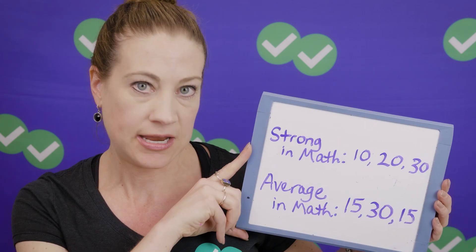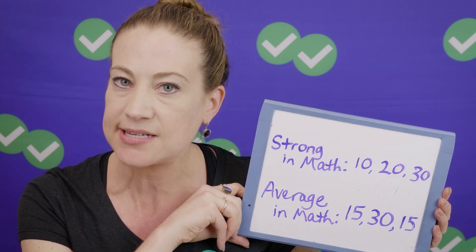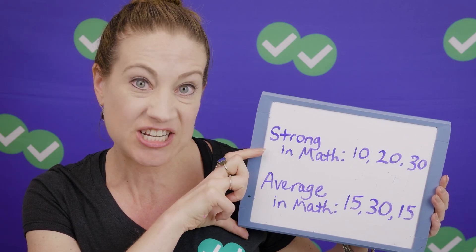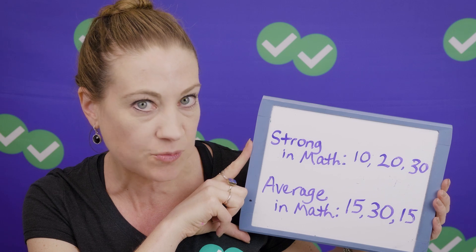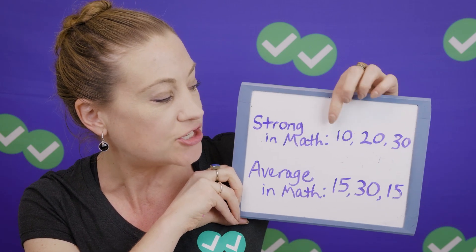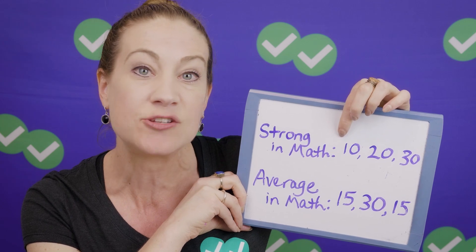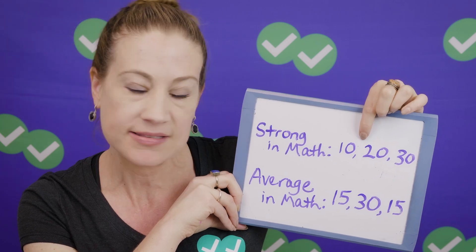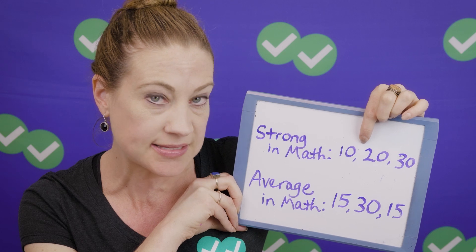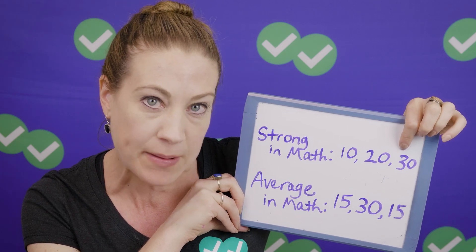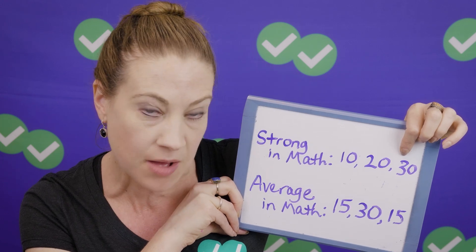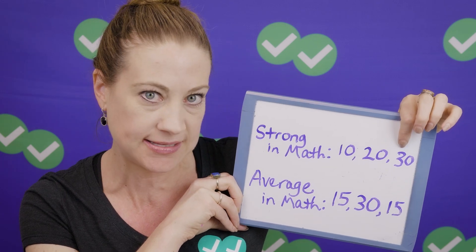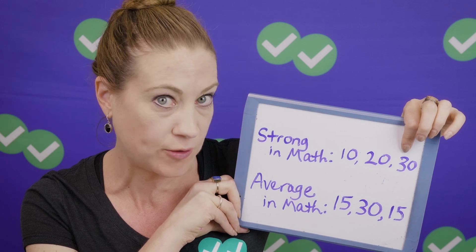If you're strong in math — say you're already getting scores in the high 20s or low 30s on practice tests — you'll want a strategy like a 10-20-30 split. That means for questions 1 through 20, give yourself just 10 minutes. For the second 20 questions, give yourself the next 20 minutes. And then make sure that by the 30-minute mark you are starting to work on the last 20 questions with 30 minutes remaining. That's a really nice split to aim for if you're strong and quick in math.